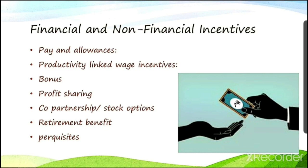Next is retirement benefit. Retirement benefits are essential incentives. These also include perks — fringe benefits like medical facility, free education for children, and housing facility. If you have extra free benefits beyond your basic salary, those are called perks. Those are the financial incentives.